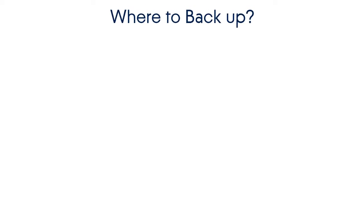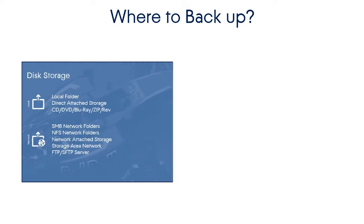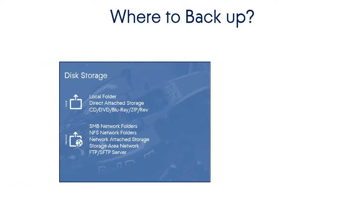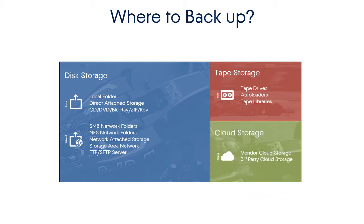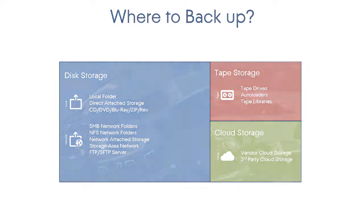Next, let's look at where we're going to back those things up to. We have disk storage, both local and network. We have tape drives where we can put things, and tape is a very common way to store things off-site. But now we have yet another option, which is cloud storage, and cloud storage can be both on things like Acronis' own storage or on third-party systems like Azure or Amazon.